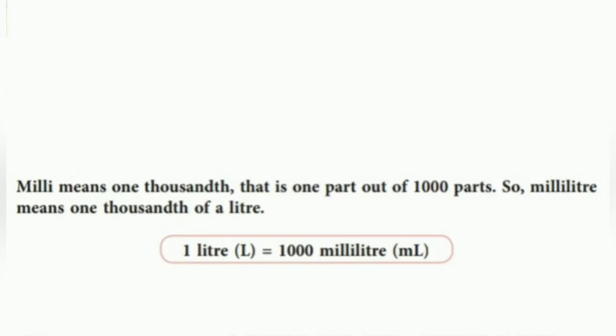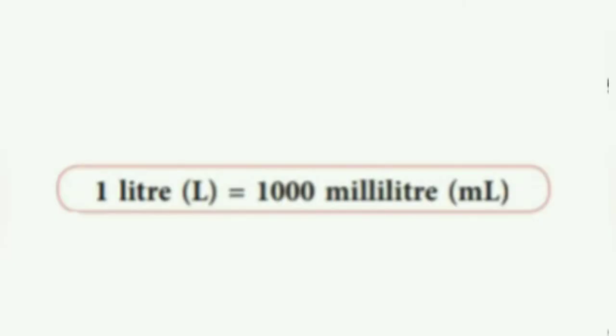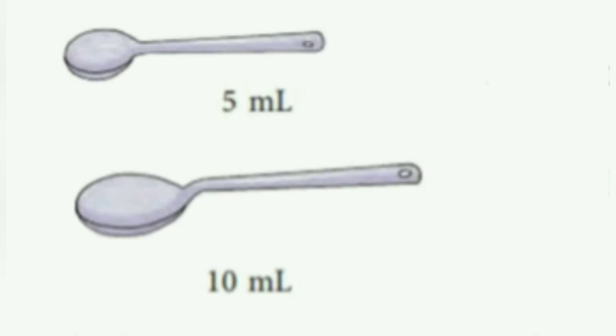Milli means 1000, that is one part out of thousand parts. So one milliliter means one thousandth of a liter. 1 liter equals thousand milliliters. A milliliter is a very small amount. A teaspoon holds about 5 milliliters of liquid.